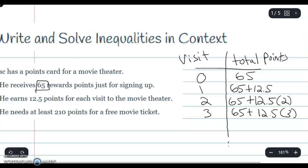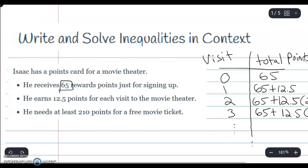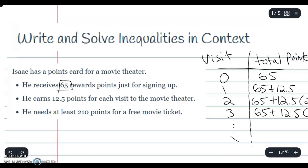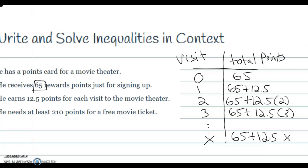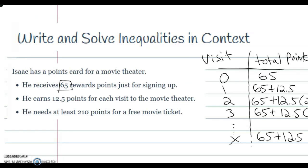We know that when you get to x amount of visits we're going to do 65 plus 12.5 times x amount of visits, so it's 12.5 times x. This is how we get the total points for every visit that he does.